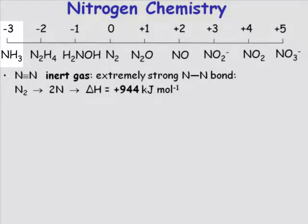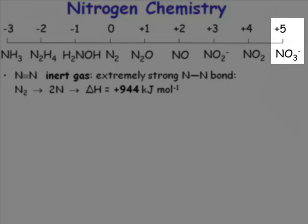Now, if we go to the opposite extent here, we take a nitrate anion, NO3 minus. Obviously, the charge on that species is one minus.